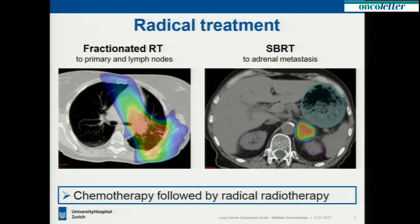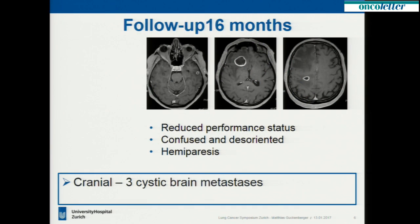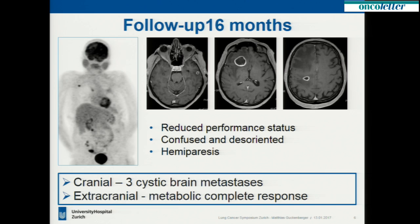So we tried a curative approach in this metastatic case. The patient was in follow-up for 16 months after radical treatment, and then she presented with substantially reduced performance status. She was confused, disoriented, with hemiparesis. You can see the MRI scan of that occasion — she had three brain metastases, very cystic, with a large edema. We did a restaging; extracranially, she was tumor-free. We wanted to push the patient to the OR for resection, but she had severe coagulation disorders, so that was not possible. We started radiotherapy only, done four weeks ago. The patient is stable from a neurological perspective, but this is not a very good outcome.